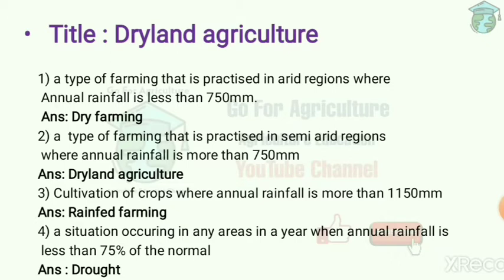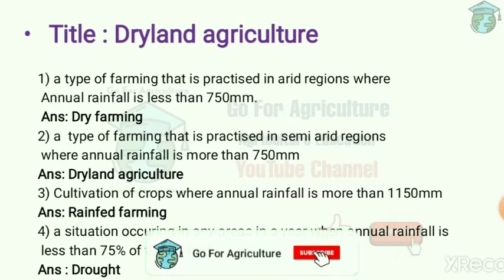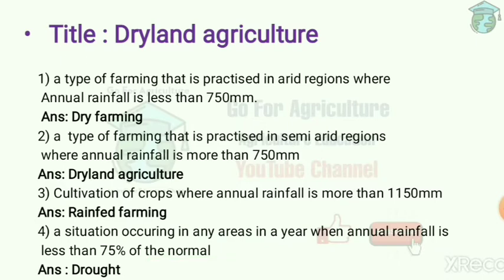The solution for dry land farming problems is soil and moisture conservation. Next question: cultivation of crops where annual rainfall is more than 1150 mm is called rainforest farming. Rainforest farming is generally practiced in humid regions, and the main problem there is drainage.